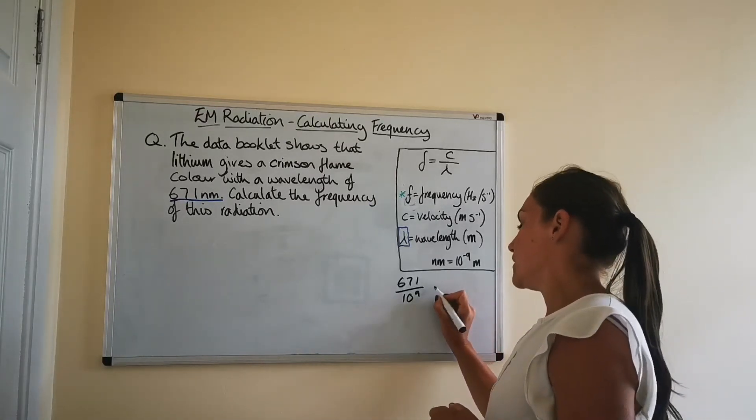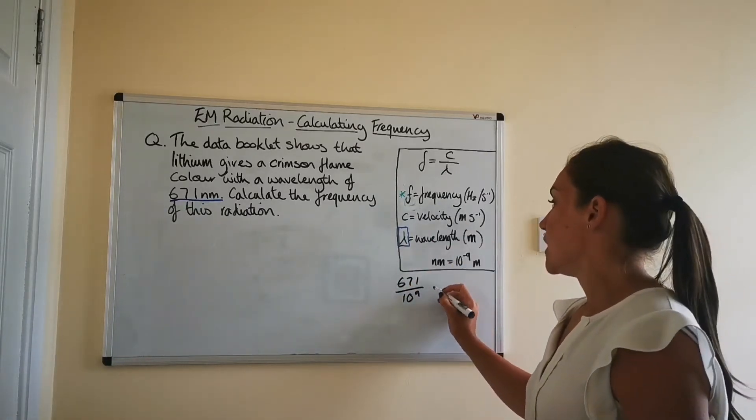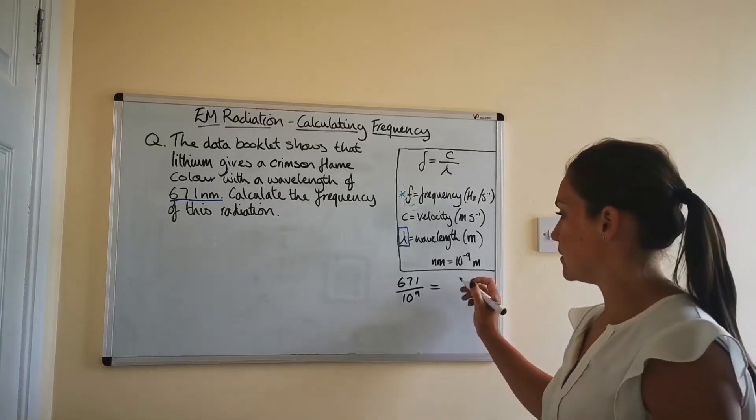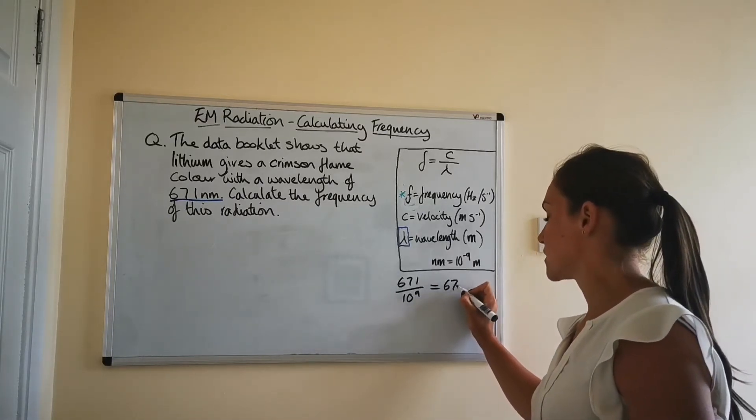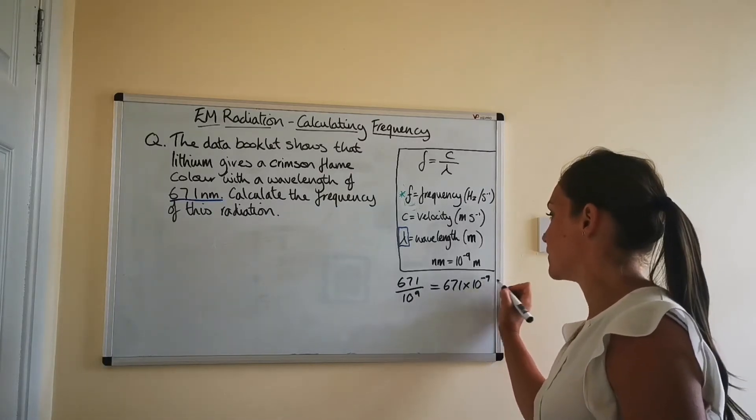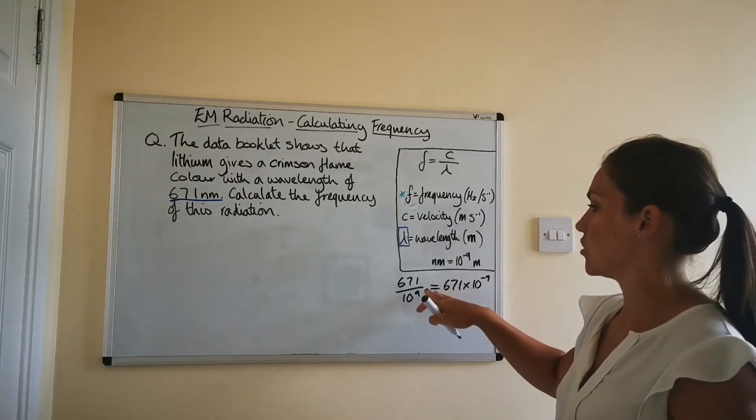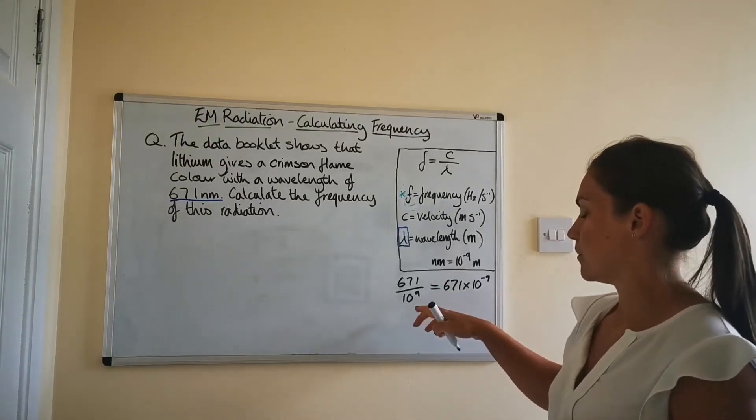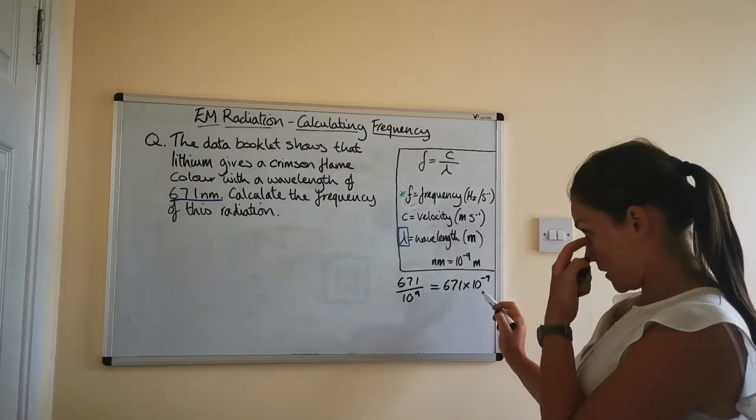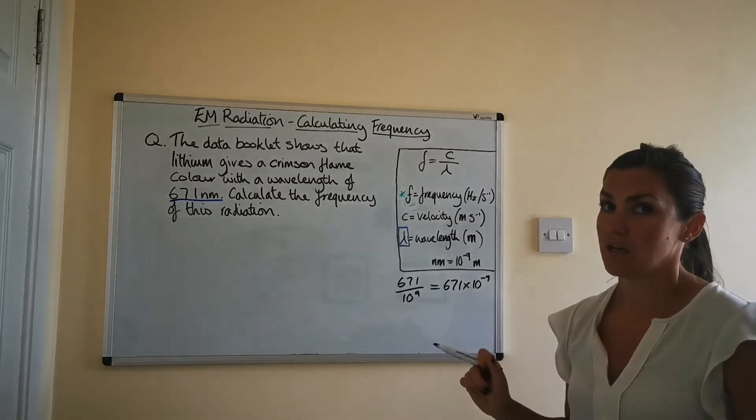Or, what you can do, and it's easier to just plug it straight into the equation, is because of the laws of indices, this can be written as 671 times 10 to the power of negative 9. Because when you move the 10 to the power of 9 to the top of the fraction, the power becomes a negative. So I'm going to do it this way, where I'm just going to take the wavelength given in nanometers and put times 10 to the minus 9 after it.